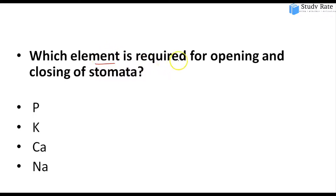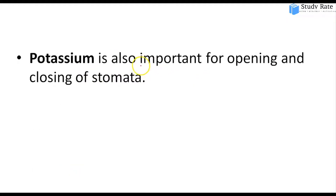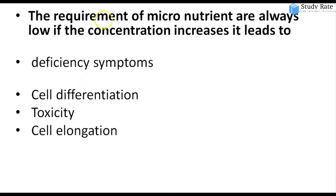Second question: Which element is required for the opening and closing of stomata? Options: potassium, phosphorus, calcium, or sodium. The answer is potassium. Potassium is mainly required for the opening and closing of stomata.